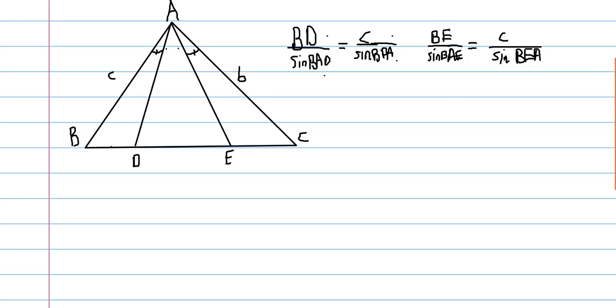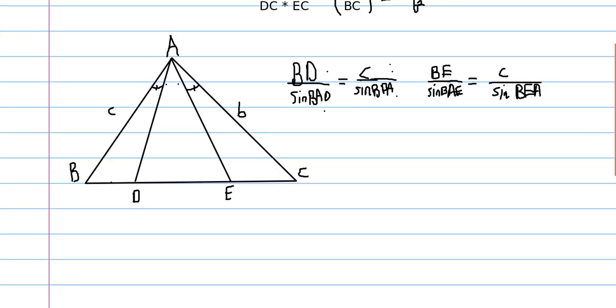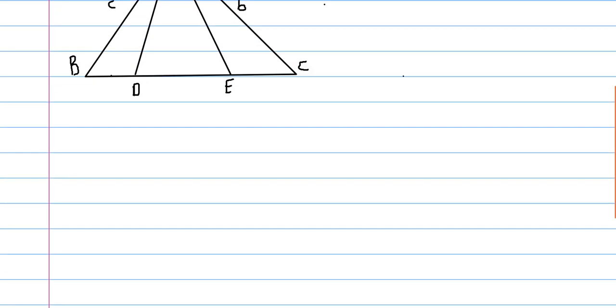And then, we'll get our c squared. See how we have BD, BE, c squared.